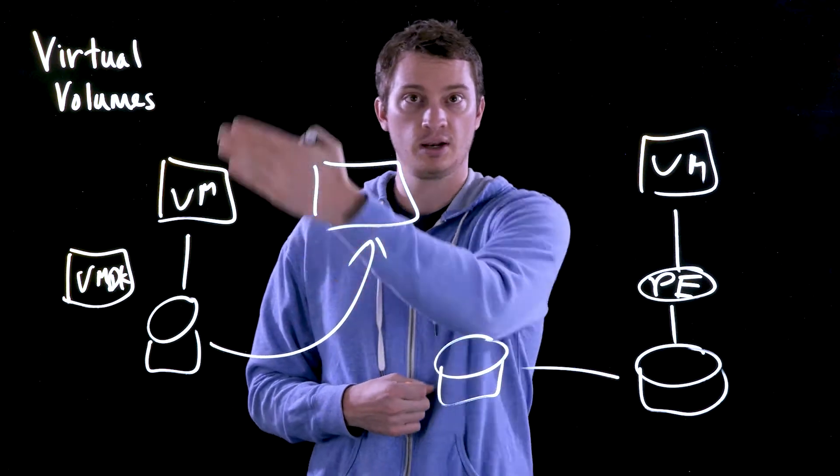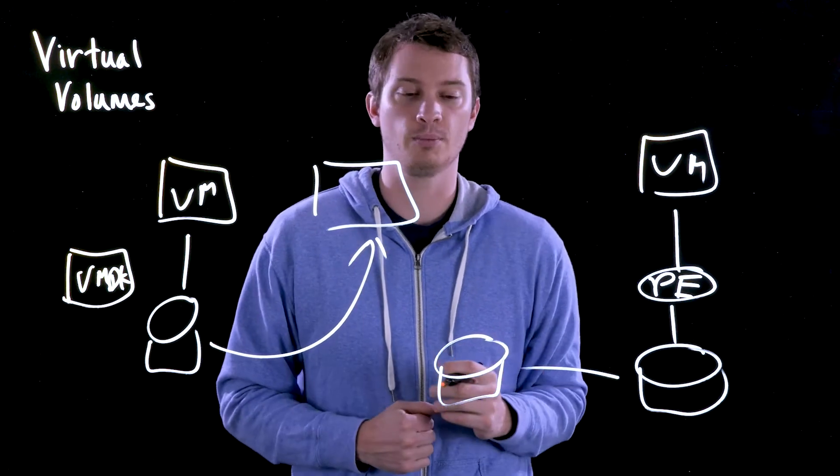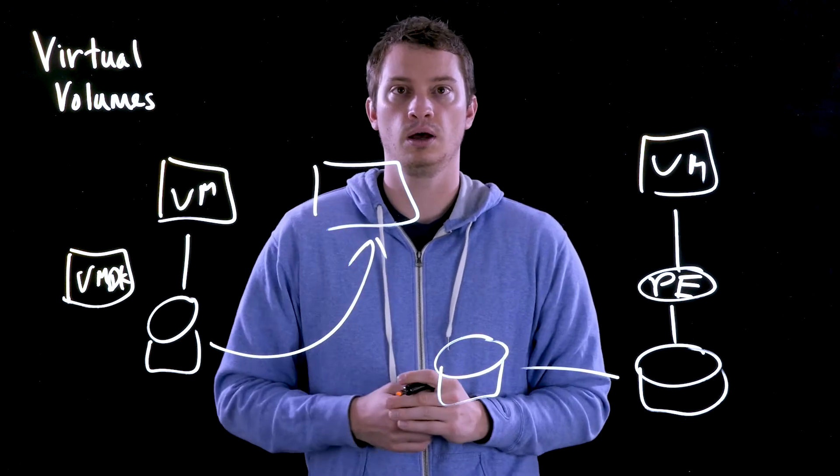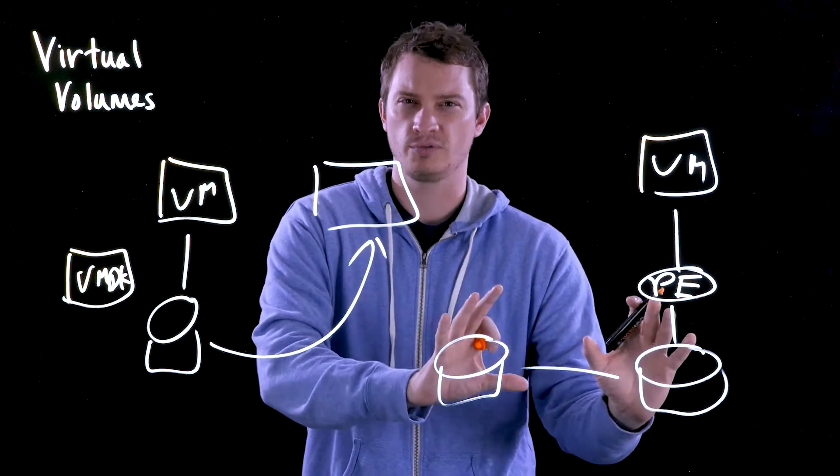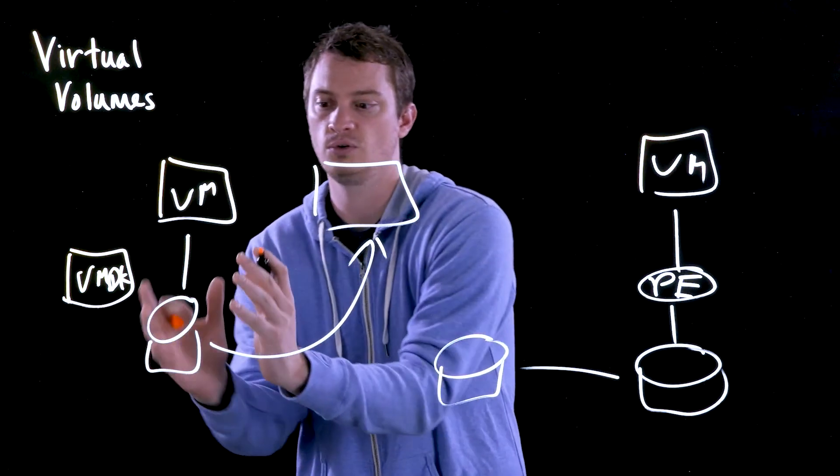And so you can take your VVol and present it up to a physical server. You can take your VVol and present it to an older version of VMware as an RDM. You can take that snapshot and restore a physical server. There's many possibilities around the mobility that this offers. You still get all the automated nature of virtual disks, but you get all the physical benefits.